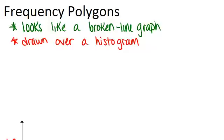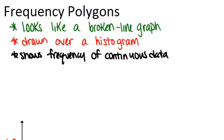Frequency polygons are used to represent continuous data and show the frequency of that data in different groups. If you already have a histogram, it's pretty easy to go from that to a frequency polygon.